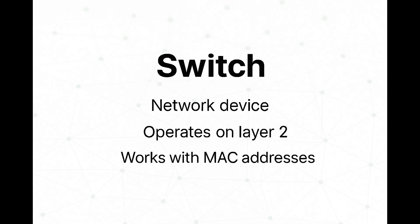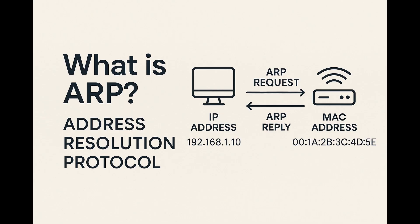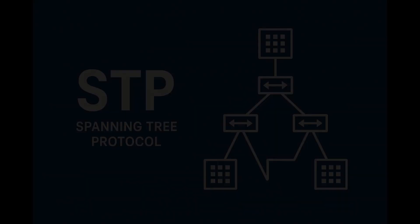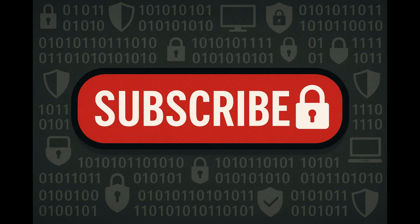The most important thing to remember from this video is that a switch is a layer two network device that works with MAC addresses, and the data here is called a frame. This is all you need to remember about switches as a beginner. There are other really fascinating topics related to switches, such as ARP — address resolution protocol — which is about how switches learn which MAC address corresponds to a particular IP address, and spanning tree protocol, which is a switch protocol used to prevent switching loops. The next two lessons will be just about these two topics, so make sure to subscribe and watch them. Let me know in the comments if you have any questions, make sure to subscribe, like this video, and see you in the next one. Bye bye!